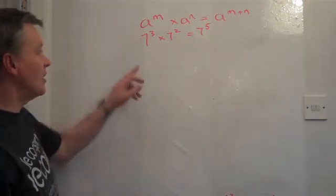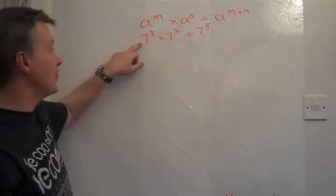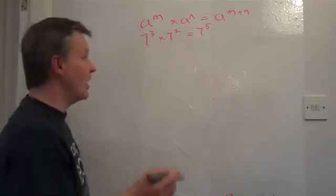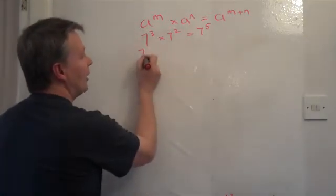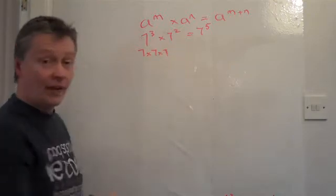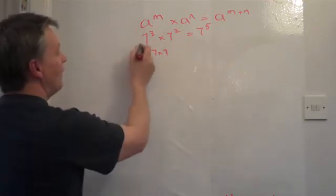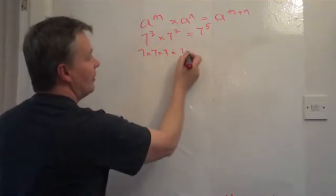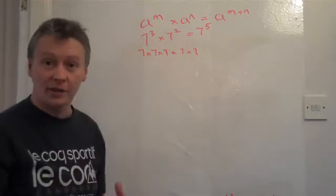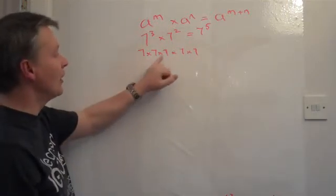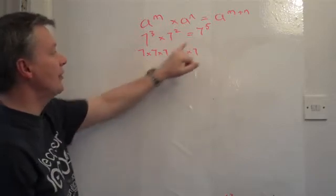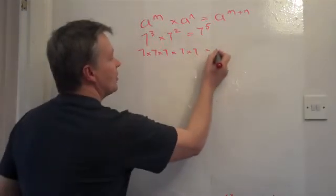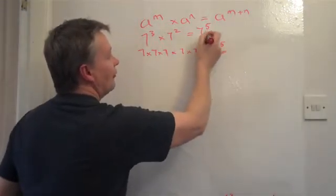The reason that works is if you look at 7 to the power of 3, or 7 cubed, that means 7 times 7 times 7. And 7 squared is 7 times 7. If I count up all those 7s, I end up with 7 to the power of 1, 2, 3, 4, 5. So the answer is 7 to the power of 5.